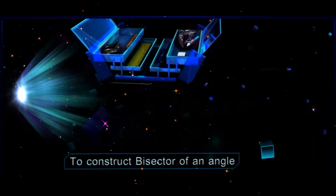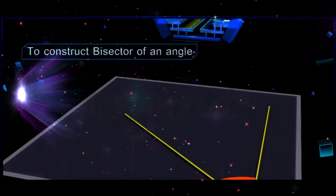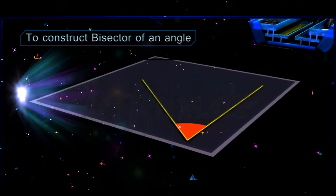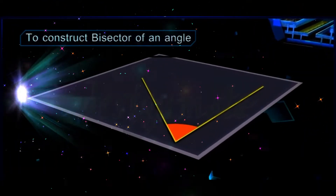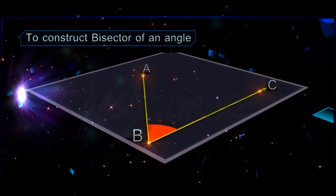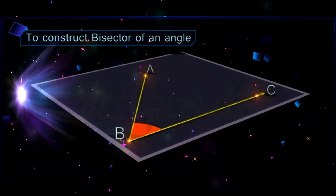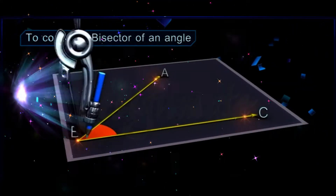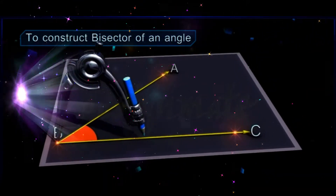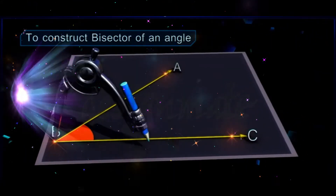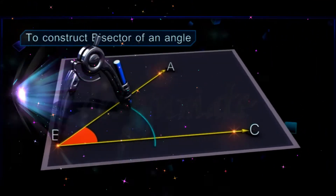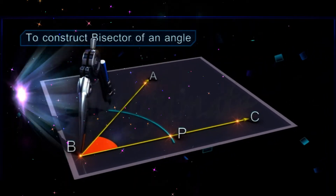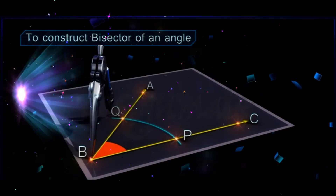To construct the bisector of an angle, let angle ABC be the given angle. With B as center and any convenient radius, draw an arc intersecting ray BC at P and ray BA at Q.